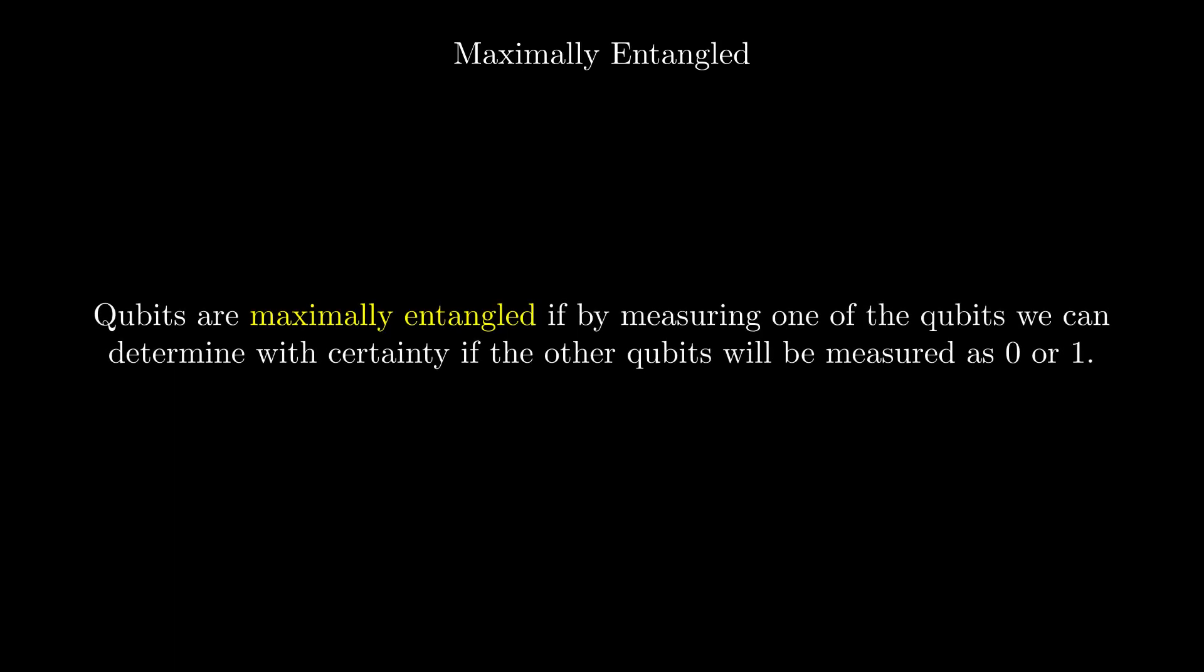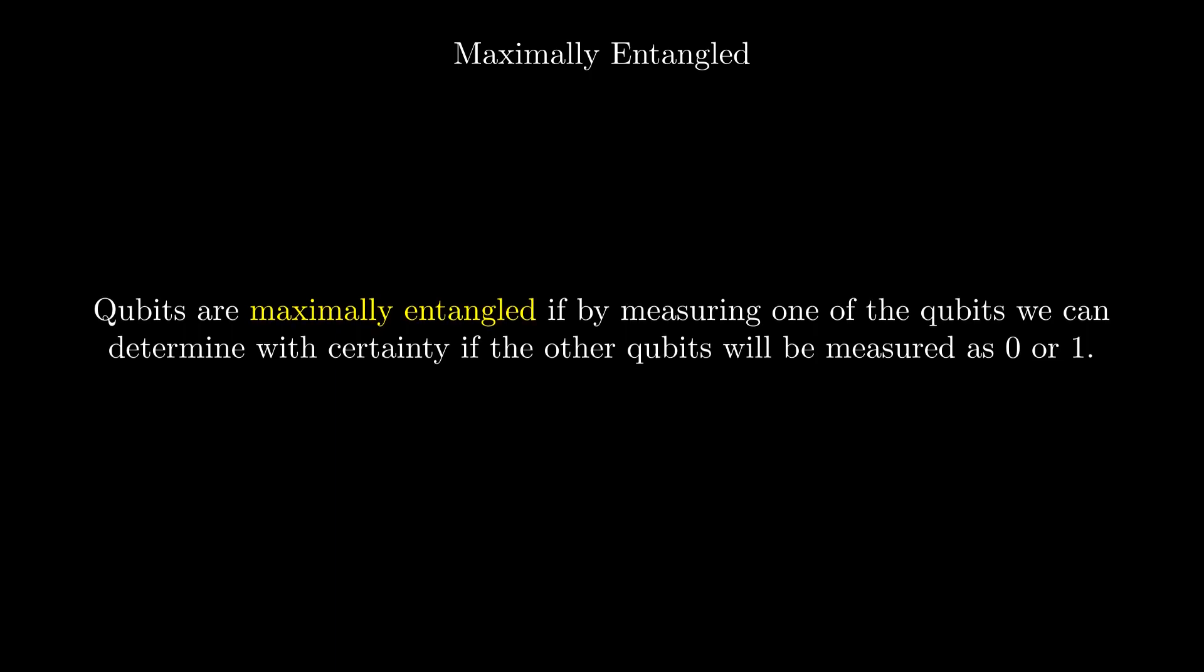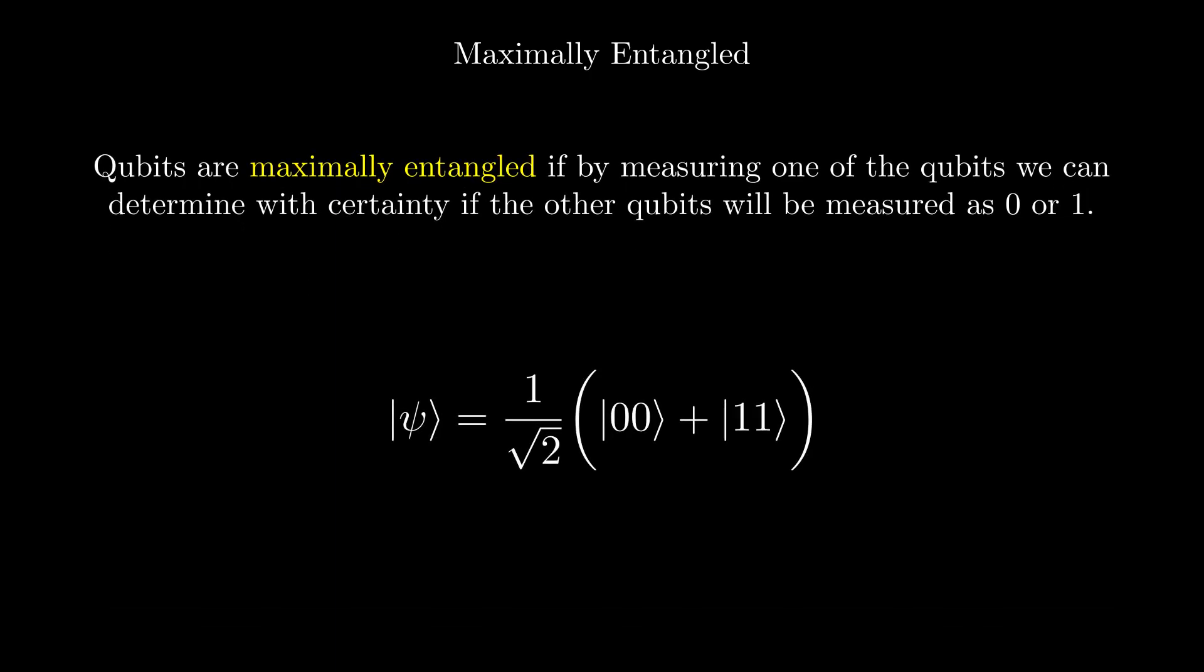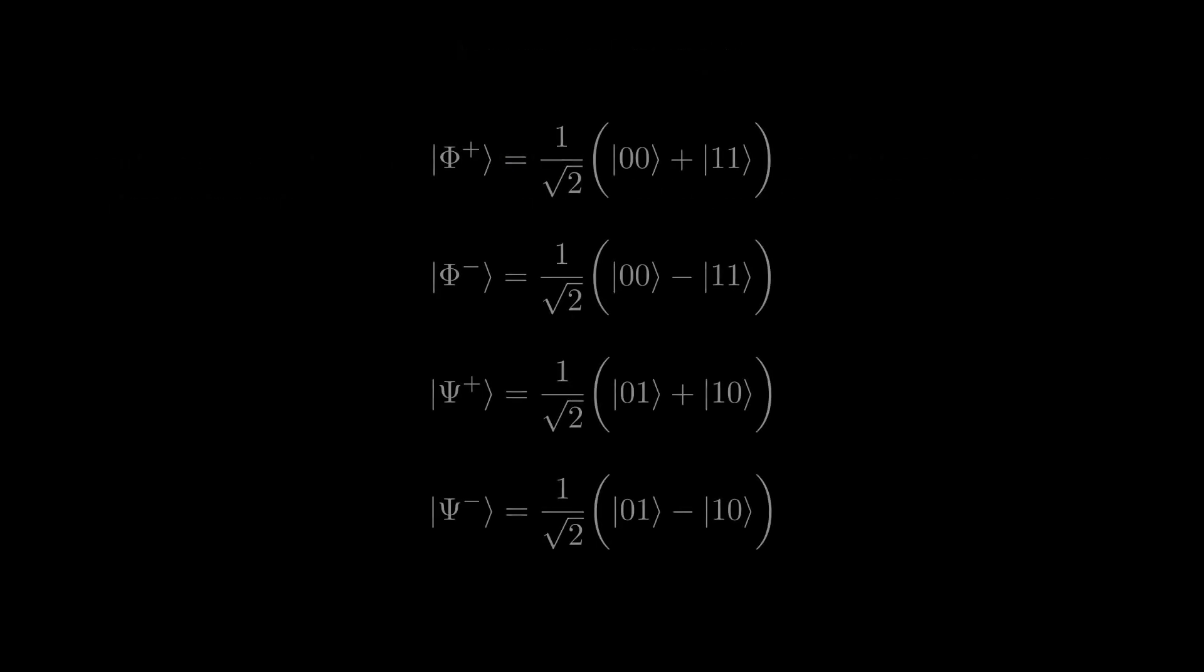We say qubits are maximally entangled if measuring one of the qubits tells us the state that the other qubits are in. So, the example entangled state from the beginning, one on root two zero zero plus one one, is maximally entangled. Here are the common maximally entangled states with two qubits. We call these states the Bell states and we denote them with capital phi and psi.